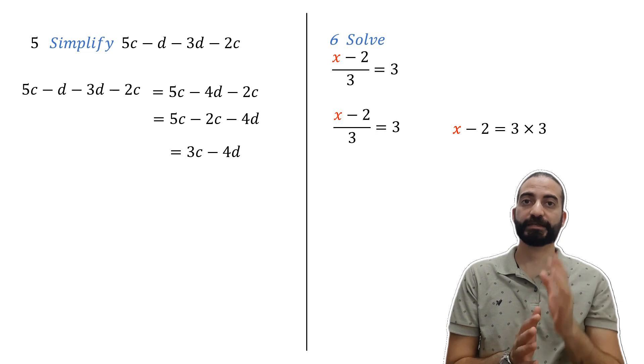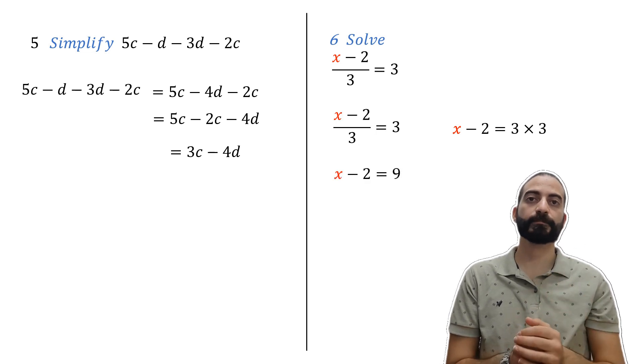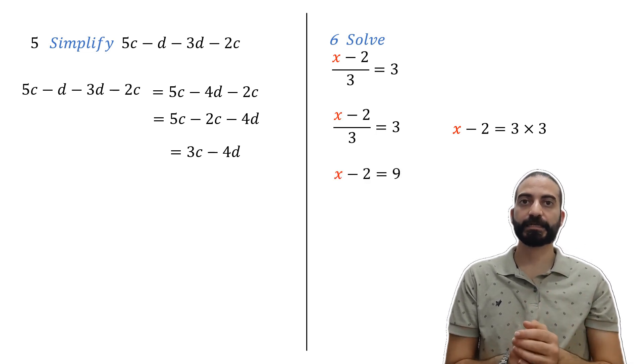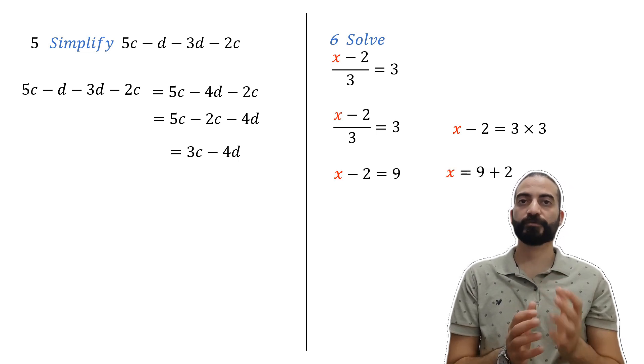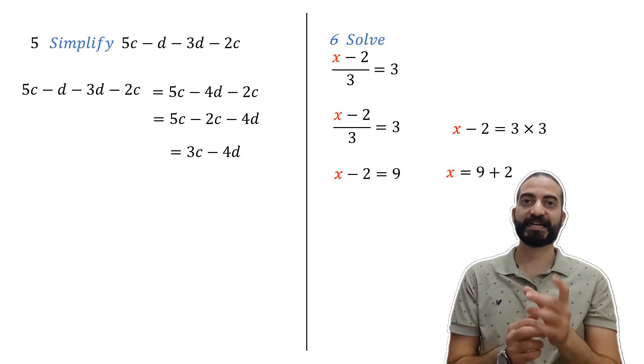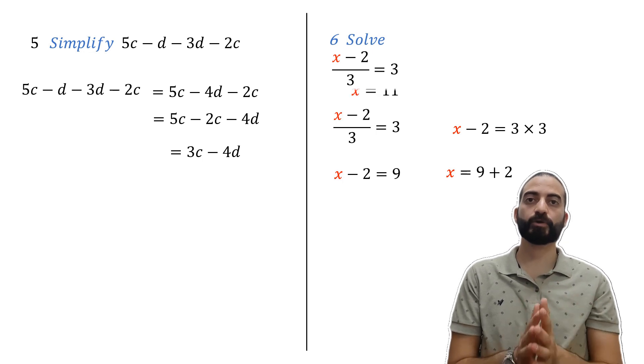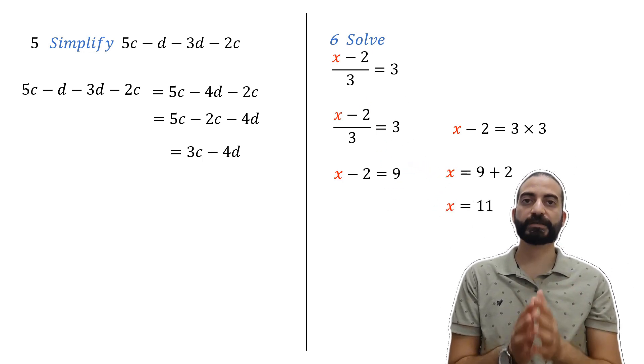3 times 3 equals 9. And in order to get x we must take minus 2 to after the equal, and for this reason the sign changes. Instead of minus it becomes plus, and so we get x.